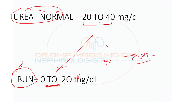Most places in the US measure BUN, while in Europe and the Asian continent many places measure urea. In India, many labs measure urea and many give the value of BUN. Grossly, both are nitrogenous waste products — only the value differs. As BUN rises, urea also rises. BUN is more specific in that only the nitrogen component is detected, but measuring either one makes no practical difference.